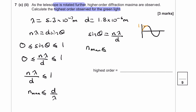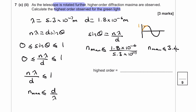Calculating d / λ: d = 1.8 × 10⁻⁶ divided by λ = 5.3 × 10⁻⁷ gives 3.39, approximately 3.4. So n must be less than or equal to 3.4. Since n is an integer (it's the order number), the highest order observed for green light is therefore 3.